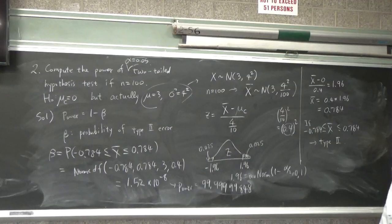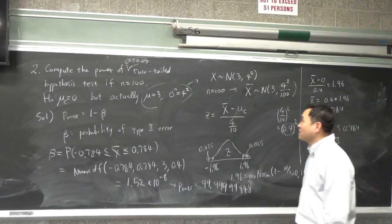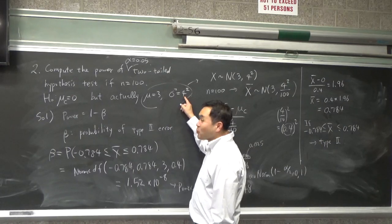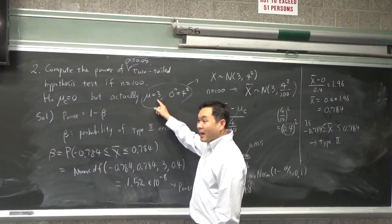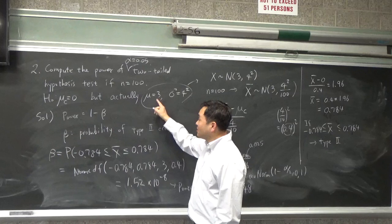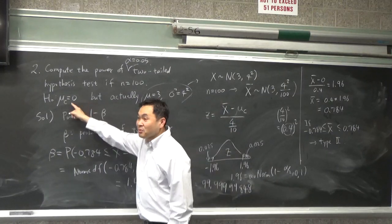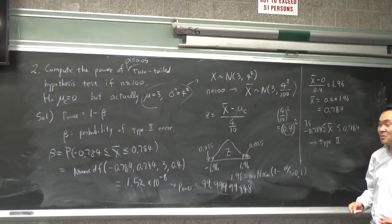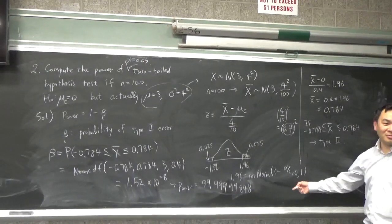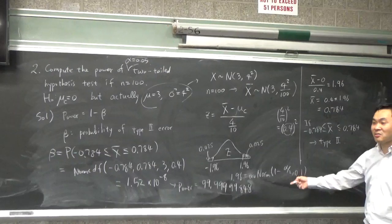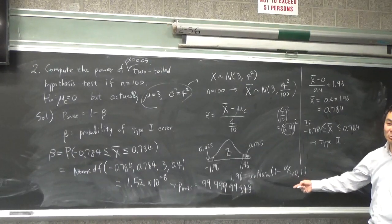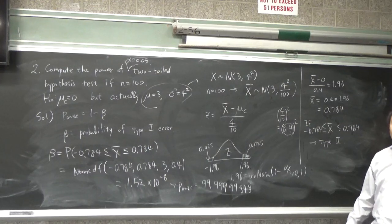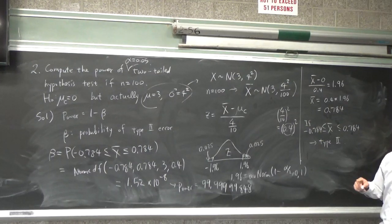So this is like definitely, what this means is that if the standard deviation is 4 and the actual average is 3, which is far off from 0, then if you do a testing with 100 samples, there's no way you're going to fail to reject the null. You'll never get the type 2 error. You have a question?